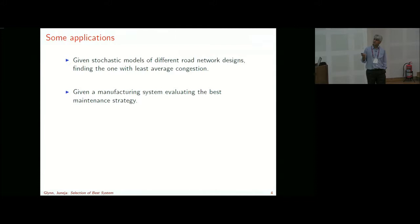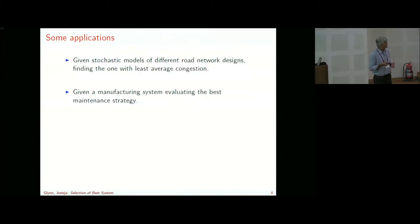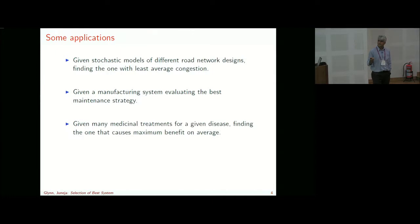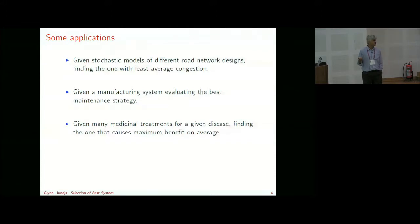Some applications: stochastic models of different road network designs, stochastic discrete optimization where you have a discrete number of options and want to find the best one — finding the road network with least average congestion, evaluating the best maintenance strategy among many strategies, or given many medicinal treatments for a disease, finding the one that causes maximum benefit on average.